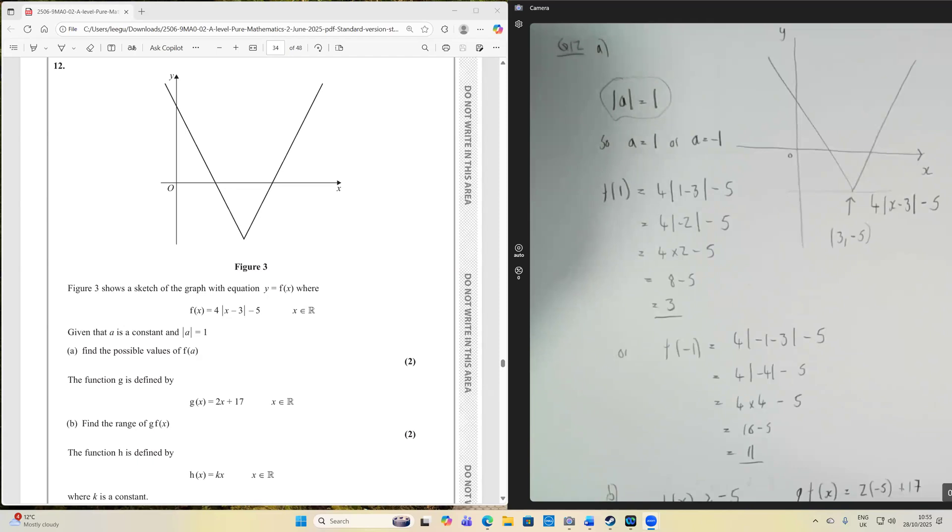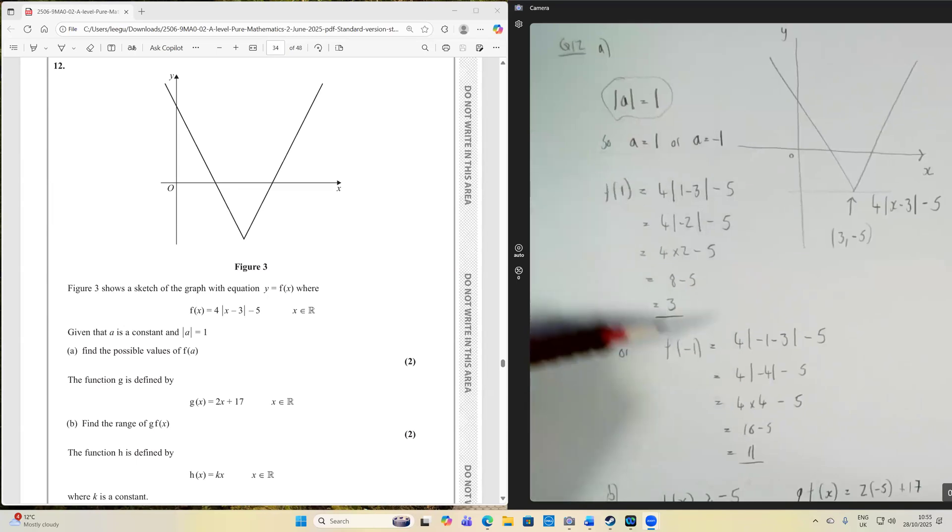Given that a is a constant and that the modulus of a is 1, find the possible values of f of a. Well, if the modulus of a is 1, that means a was either 1 or a was minus 1. So we just need to evaluate f of 1 and f of minus 1.